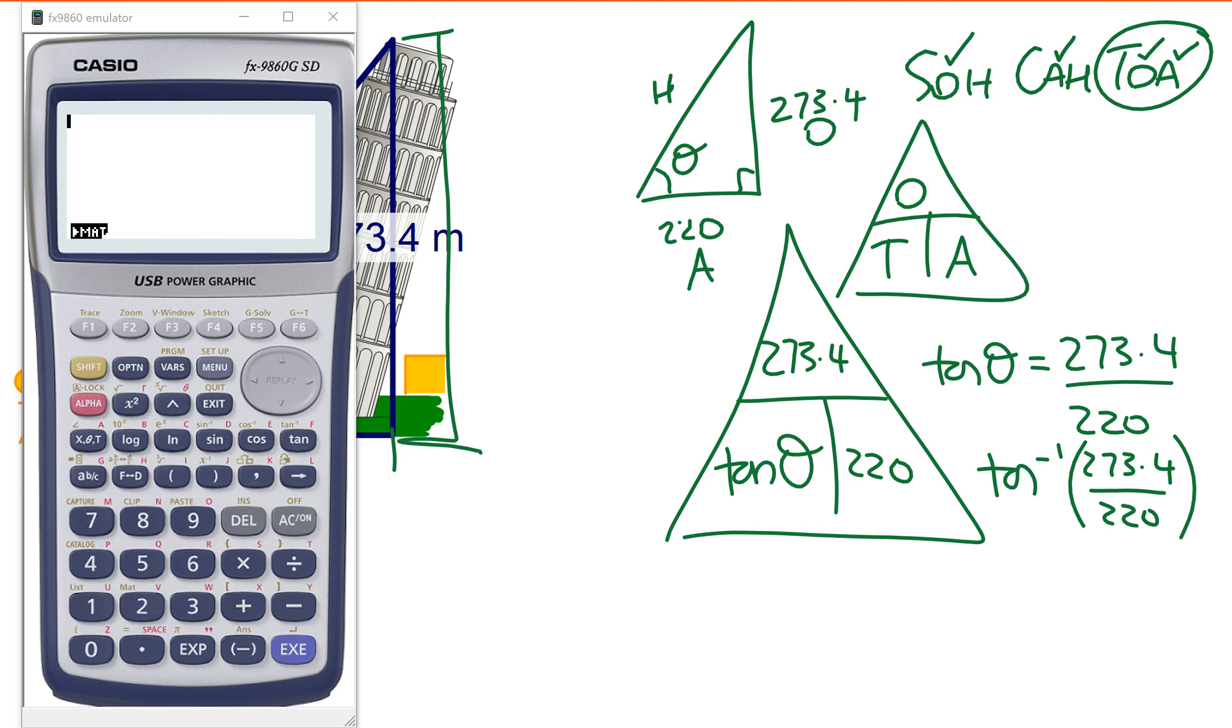So to do that, all I'm going to do is press shift tan in brackets, put down 273.4 divide by 220. Now if you've got the new calculator, you can use the fraction button. Just go tan fraction of that, put that into my answer. And remember, this gives me a degree, so I need to always change that. That gives me an answer of 51.2 degrees.